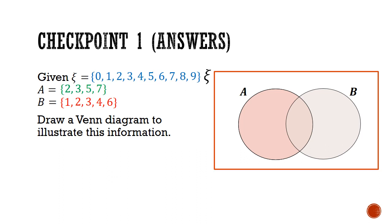If we compare set A and set B, we can see that the elements 2 and 3 is common. So we can move them into the region where A intersects B. What is left in set A is the elements 5 and 7. So these will go into the region that is in A but not in B. And what is left in set B are the elements 1, 4, and 6. And these will go in the region of B that is not in A.